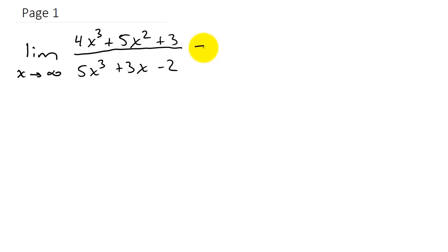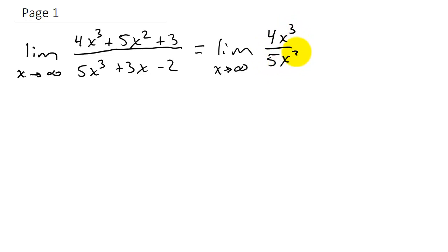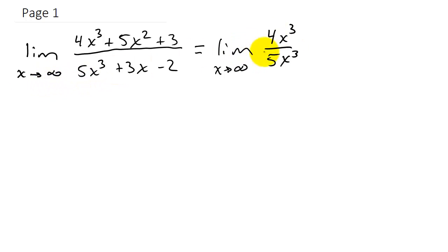I can rewrite this as the limit as x goes to infinity of 4x cubed over 5x cubed. What I'm doing here is keeping the term with the largest exponent in the numerator and the term with the largest exponent in the denominator. You can only do this if x is going to infinity or negative infinity. If x is approaching a number like 0, 1, 2, or negative 1, then you cannot do this.